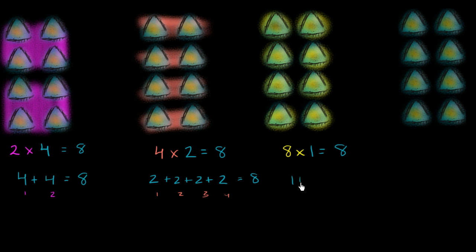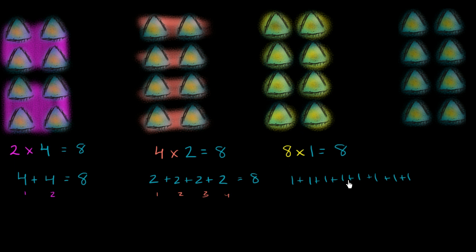So: one plus one plus one plus one plus one plus one plus one plus one — that's one, two, three, four, five, six, seven, eight ones. One plus one plus one plus one plus one plus one plus one plus one is equal to eight.